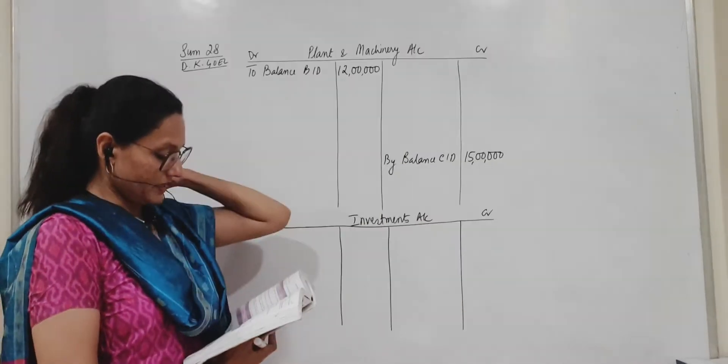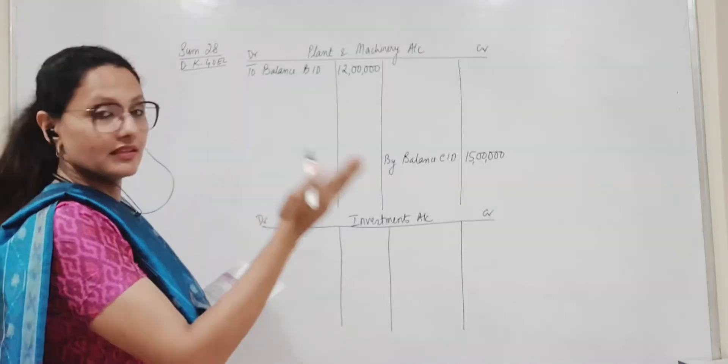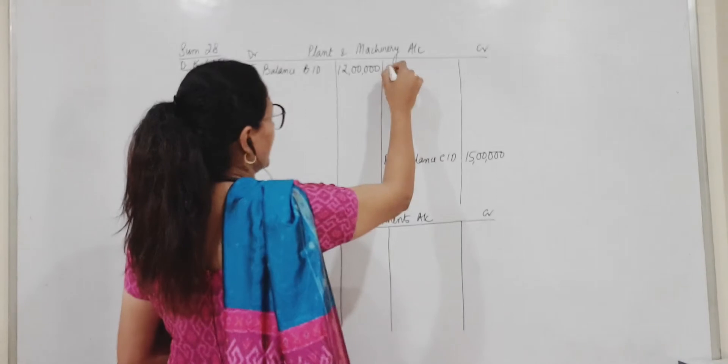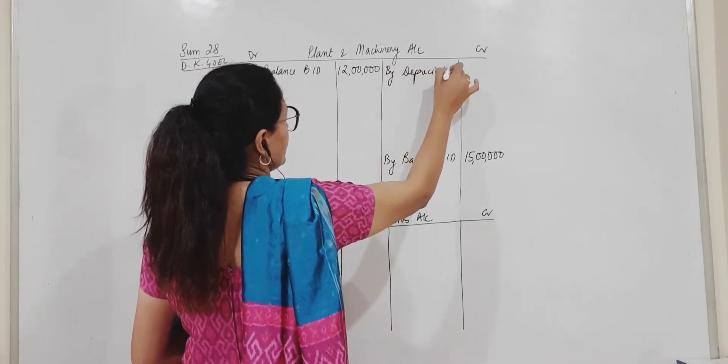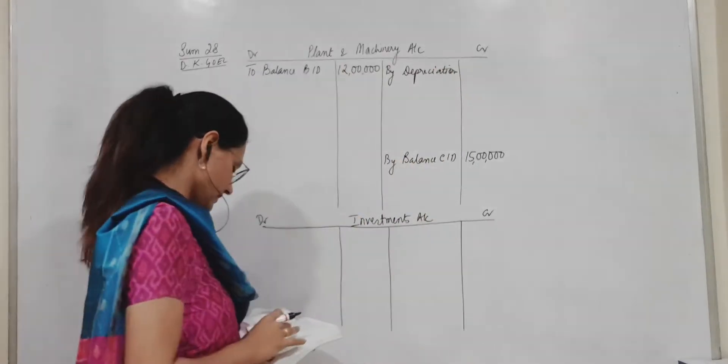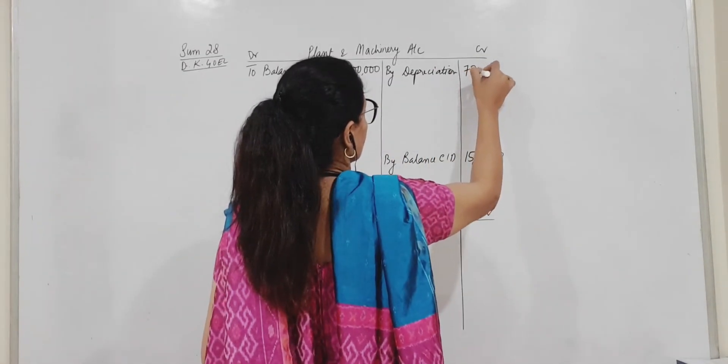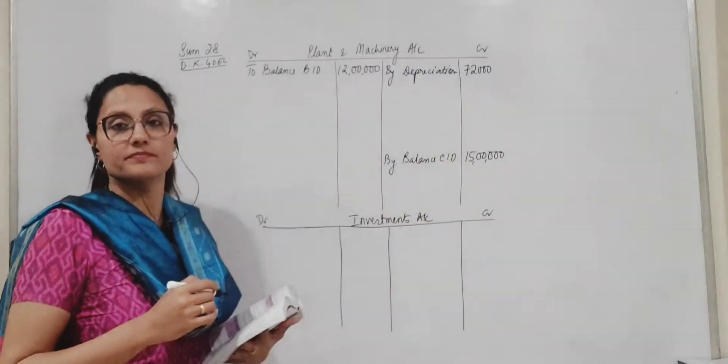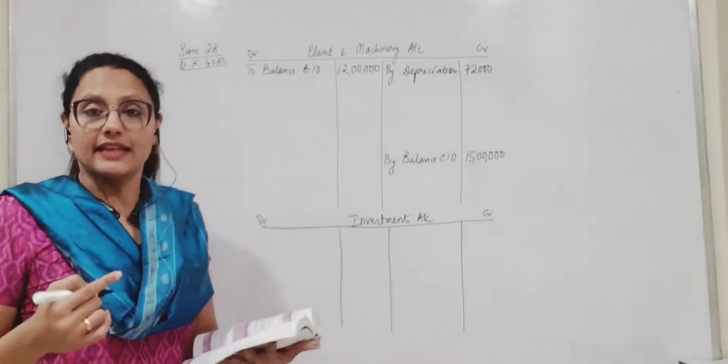Then coming to depreciation. When we depreciate any asset, it is credited by depreciation. This is depreciation for this year. This was 72,000. Again depreciation has to come on the credit side.